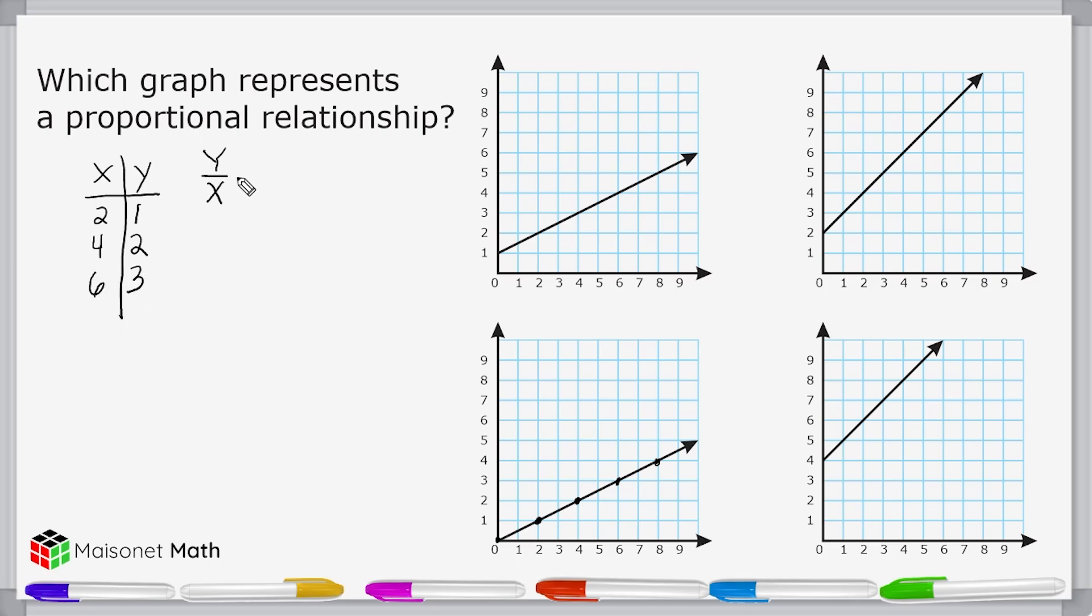So if we compare each y to each x, we would notice that we have equivalent ratios. And ratios that are equal to each other are considered proportional to each other. Therefore, we have a proportional relationship.